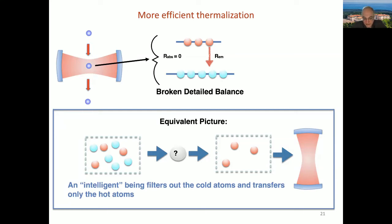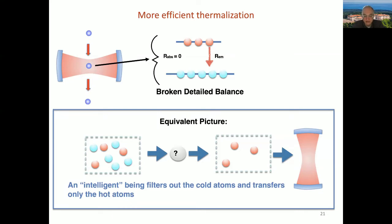The idea is: if we map the thermalization in the blackbody regime of the micromaser to an open system dynamics between negative and positive zero temperature baths, can we manipulate the transition rates using our experience from quantum optics? Yes — we know a lot about manipulating transitions: electromagnetically induced transparency, lasing without inversion, optical trapping states, and so on. Can we use quantum superposition or coherence effects to engineer the thermal state of the cavity field?